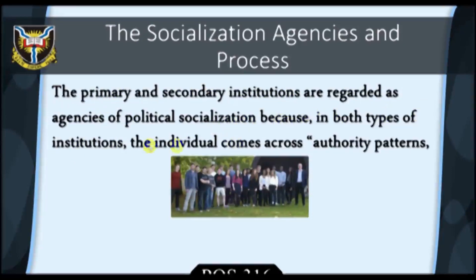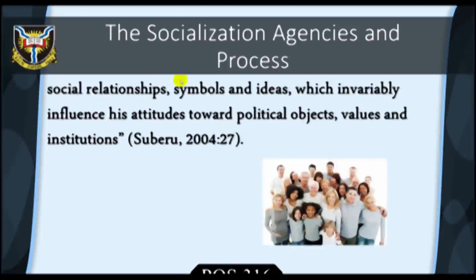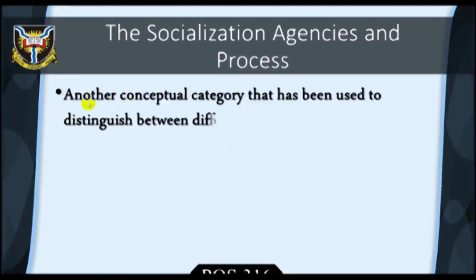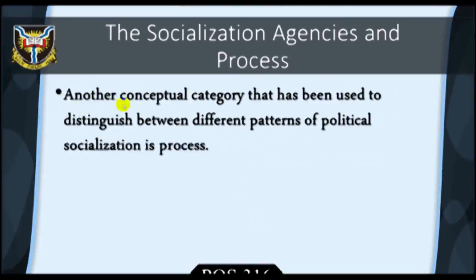The primary and secondary institutions are regarded as agencies of Political Socialization because in both types of institutions, the individual comes across authority patterns, social relationships, symbols, and ideas, which invariably influence his attitudes towards political objects, values, and institutions. For example, we can argue that an individual's attitude towards public figures, institutions, and authority in general is most probably a function of the type of relationship he had with his parents or guardians when he was growing up.